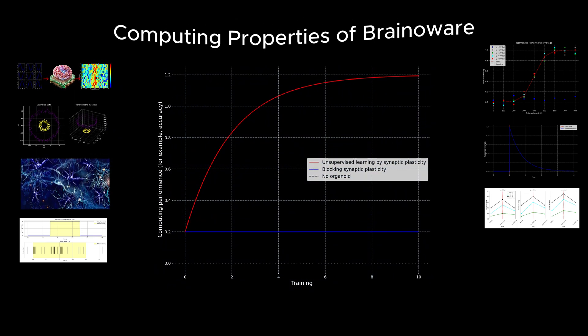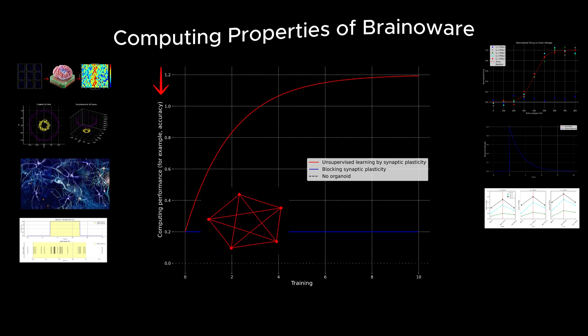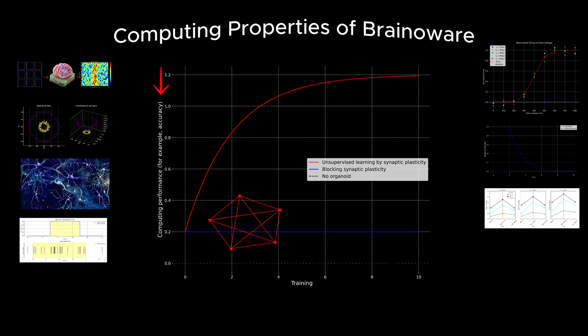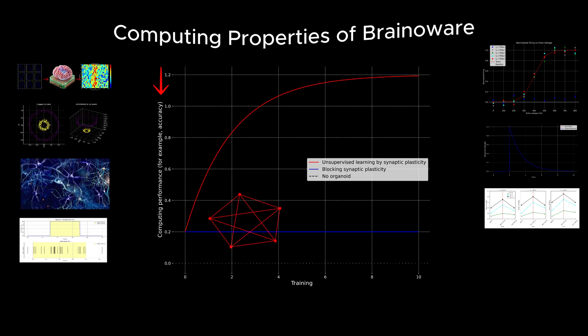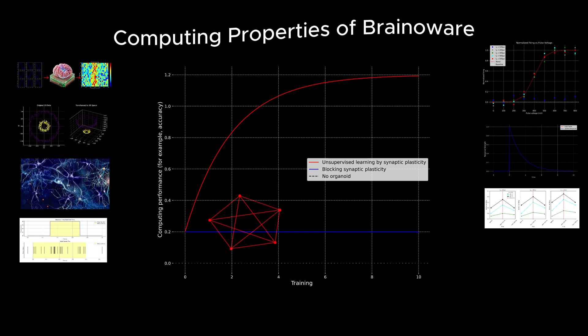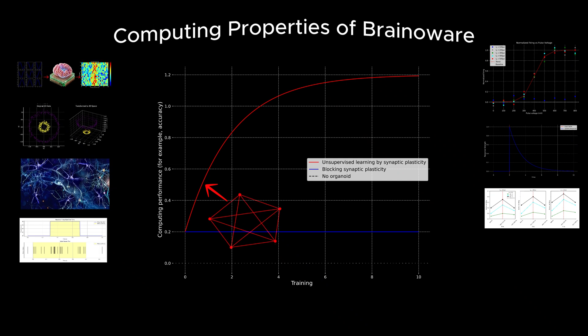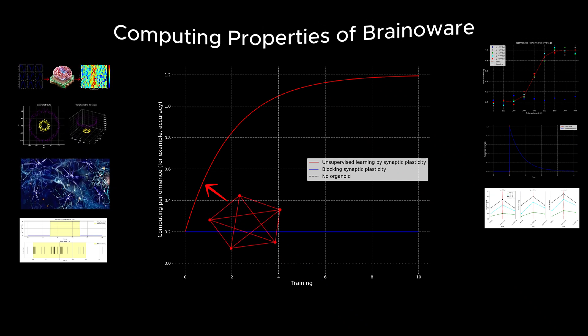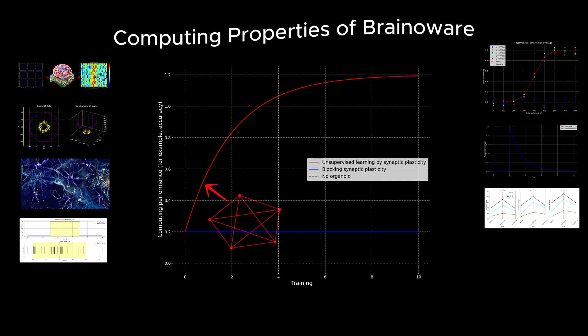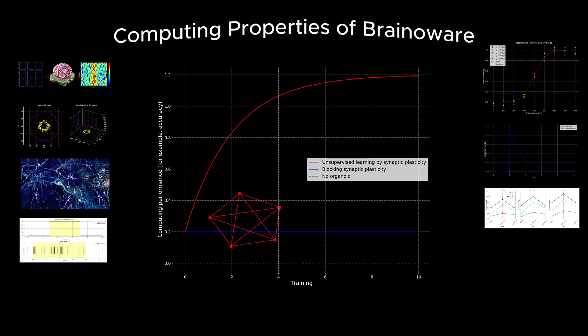Before training, the researchers measured the organoids' ability to classify the vowels based on its pre-existing functional connectivity, which refers to the network of neural connections naturally present in the organoid. The results showed that BrainAware initially achieved an accuracy of approximately 51%, equal to almost a random selection. This indicated that the naive, untrained organoid could perform no classification due to its inherent connectivity.